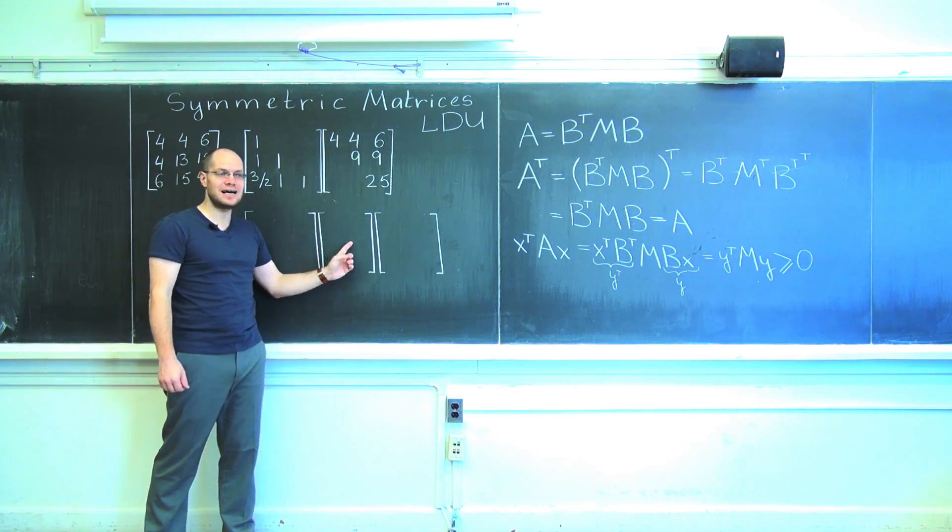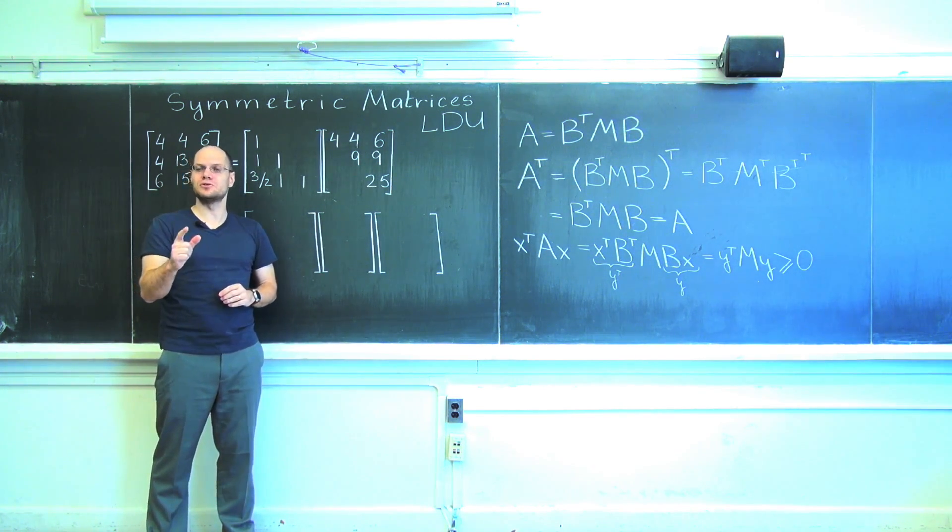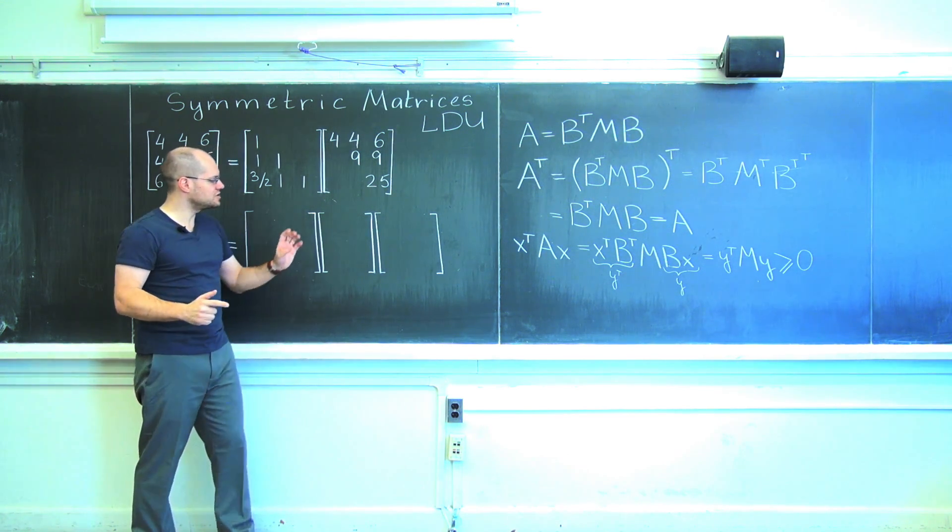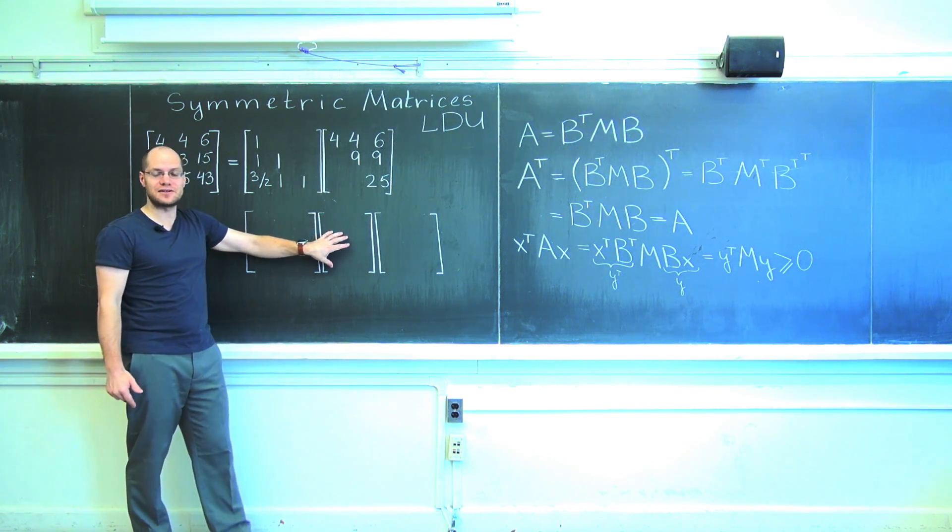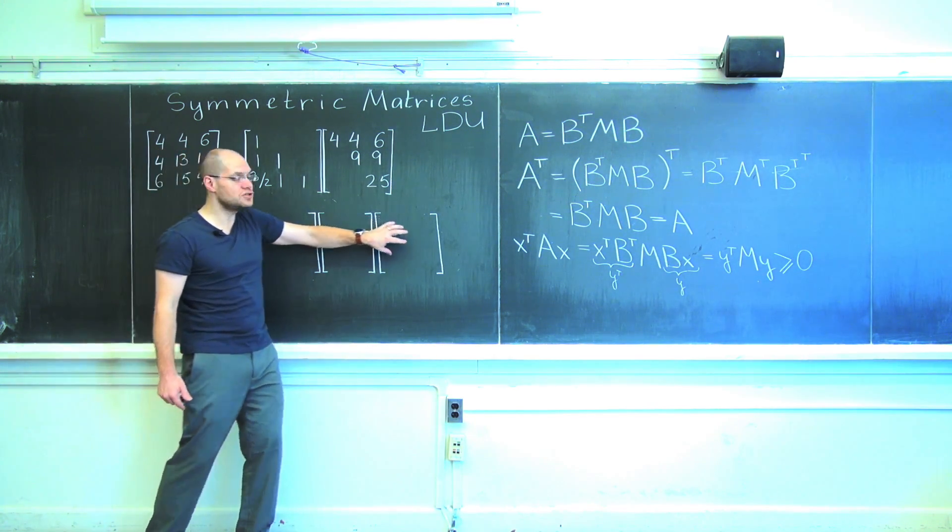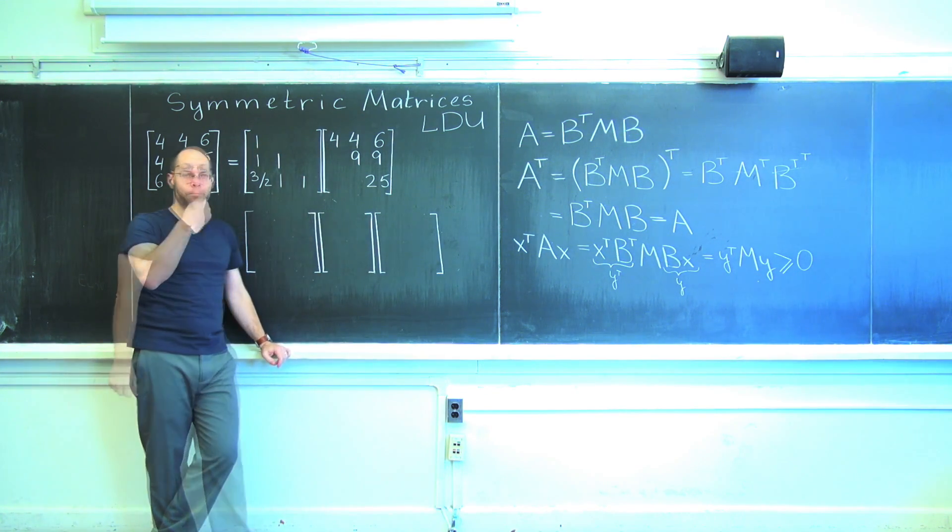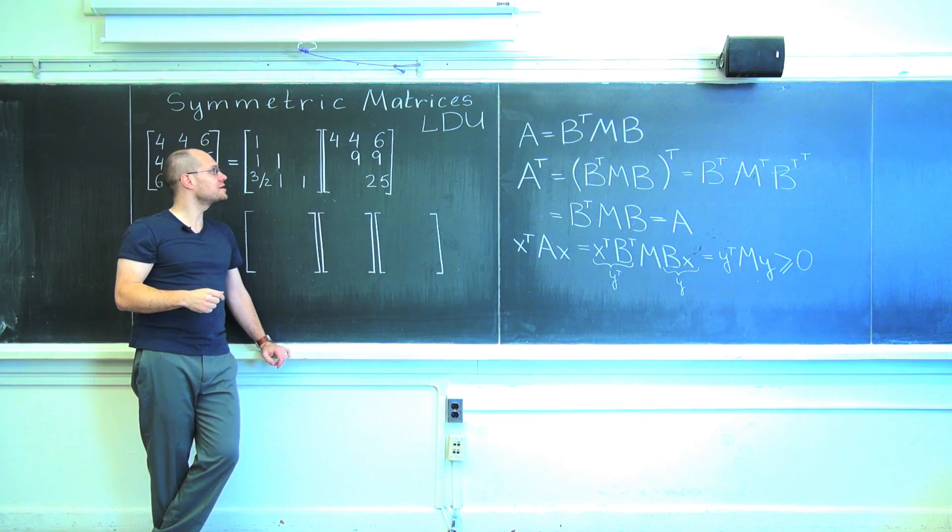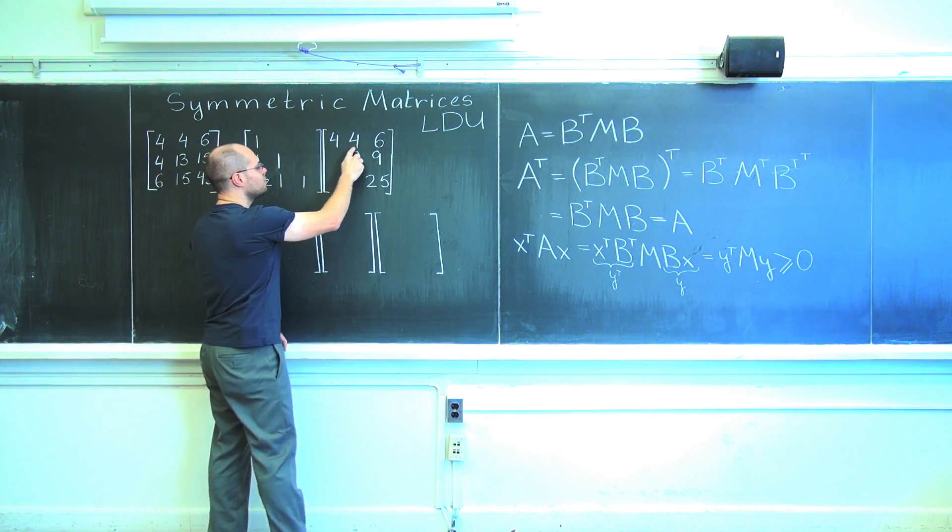It will have 4, 9, and 25 on the diagonal. And what I want you to do is to use the elementary matrix logic to tell me what will be left of U after you factor out this D. So think of a matrix U so that when you combine them back together you get this matrix. When I factor out 4, 1, 1, 3 halves.